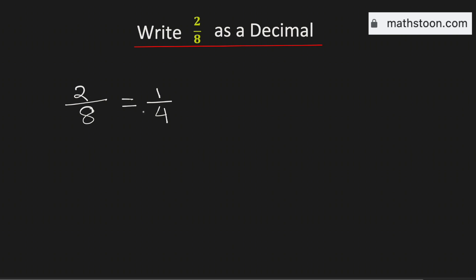Therefore, the fraction 2 over 8 is equivalent to 1 over 4. Now to write 2 over 8 as a decimal, we just need to divide the number 1 by 4.